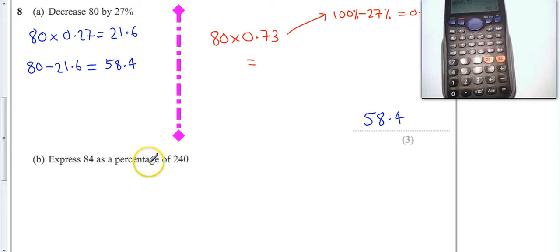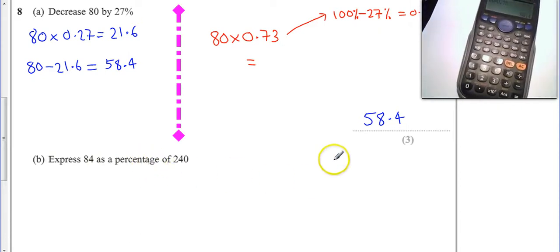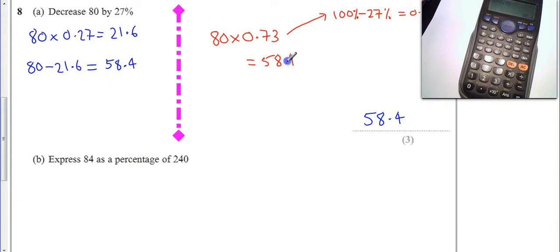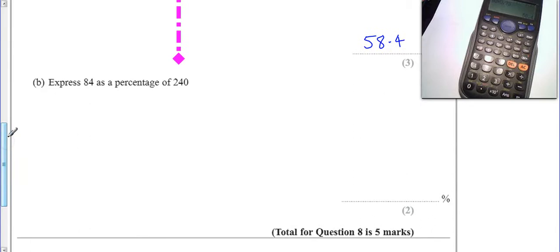80 times 0.73 is 58.4, which is what we had before. No problem whatsoever. Bottom one here, so it says express 84 as a percentage of 240. Well that means I want 84 out of 240. I want to express it as a percentage.